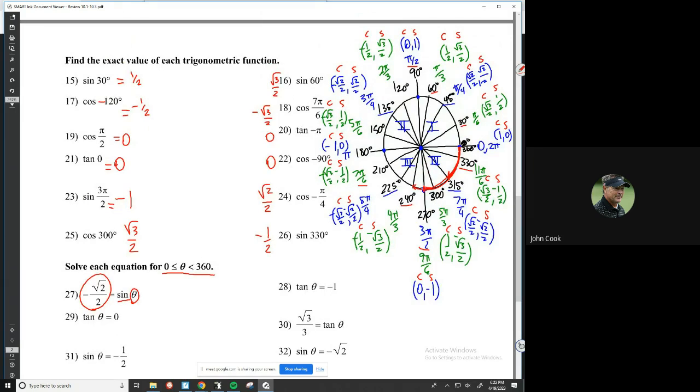Sine is always going to be the y value, and when I have a negative square root of 2 over 2, that would be right here at 225 degrees. So that's one of my answers, 225 degrees, according to my unit circle. And then I have another place where that happens, where the sine is negative square root of 2 over 2 over here, when the angle measurement is 315 degrees. So there's two places on the unit circle where I get that angle measurement.